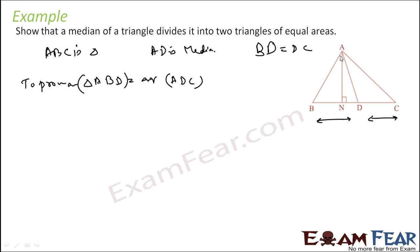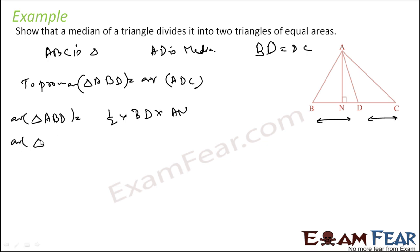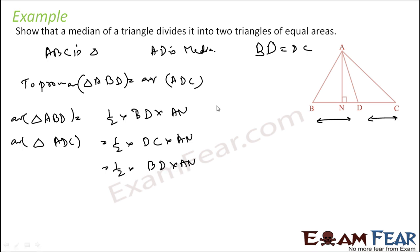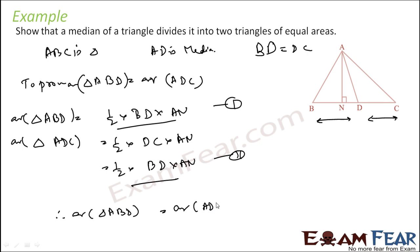Both triangles have the same area. Let us find the area of triangle ABD — it is half into base BD into height, which is A. What is the area of triangle ADC? That will also be half into base DC into height, which is A. Since BD equals DC, we can substitute. From equation 1 and equation 2, the right-hand sides are equal. Therefore the area of triangle ABD is equal to the area of triangle ADC.